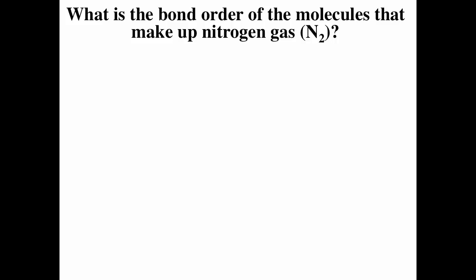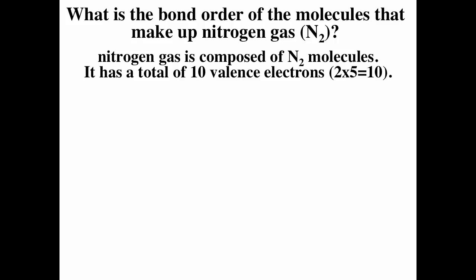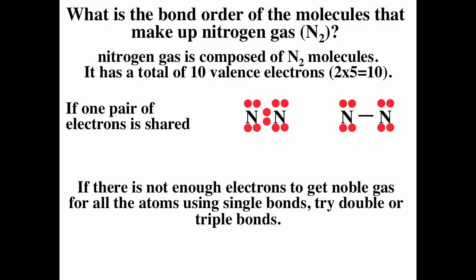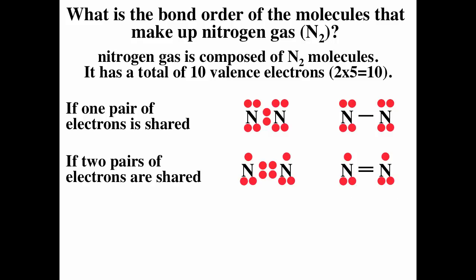For N2, nitrogen is in the fifth column — two times five gives us ten valence electrons. Trying a single bond uses the right number of electrons, but each nitrogen only sees six — not noble gas configuration. So we try a double bond; still using ten valence electrons, but now nitrogen sees eight... actually only six from the bonding side plus the lone pairs — we still don't have an octet. So the double bond doesn't work either.